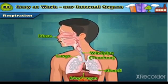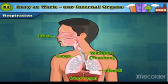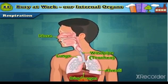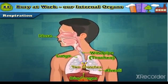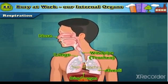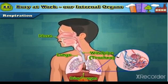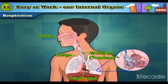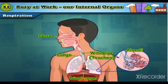The air then enters the lungs through the two branches of the trachea. Inside the lungs, these two branches divide further into smaller and smaller branches. At the end of each of these branches there is a small air sac. These air sacs are called alveoli.